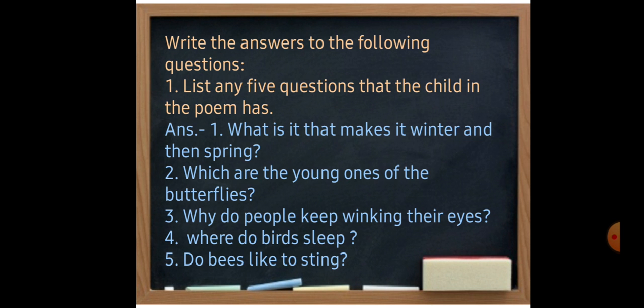First question is: list any five questions that the child in the poem has. Any five questions we have to write here which we have learnt in our poem. Answer is: first question came into her mind is what is it that makes it winter and then spring.